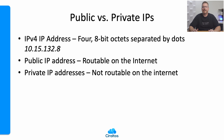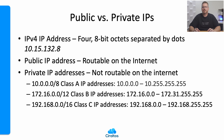Instead of giving every device a public IP address, some blocks of IP addresses were designated as private IPv4 addresses. These private IP addresses cannot be used on the internet — any private IP that attempts to access the internet will be dropped at the first networking device it hits. These private IP addresses are available for any organization or person to use in their private networks, such as computers connected to a corporate network, in Azure, or at home.